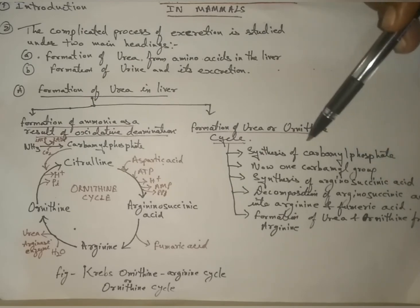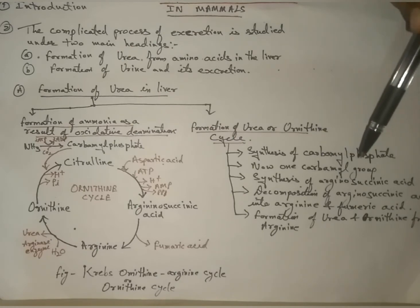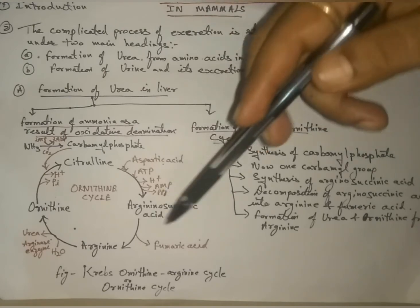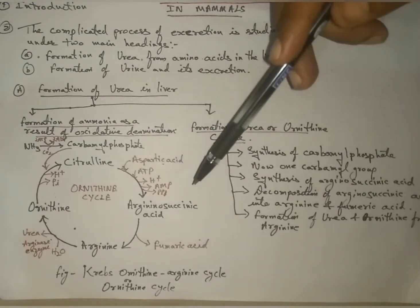The synthesis of carbamoyl phosphate: carbamoyl phosphate is formed by the interaction of carbon dioxide, one molecule of ATP, phosphate, and ammonia. This whole process is completed in the presence of enzyme carbamoyl phosphate synthetase, and two ATP molecules are utilized in the whole process. If this process is taking place in the presence of magnesium ions, it takes place very fast.